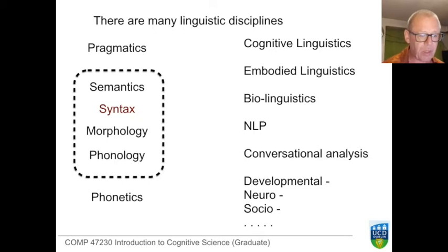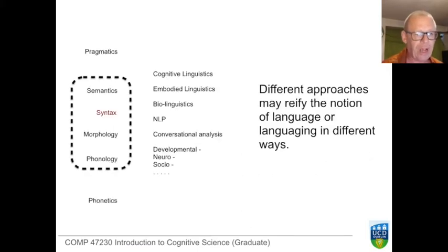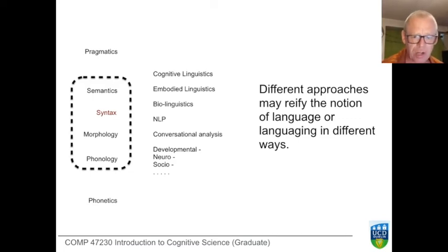Pragmatics and phonetics are somewhat distinct, and we'll make explicit the relationships between them. There are many other fields in linguistics: cognitive linguistics, embodied linguistics, bio-linguistics, natural language processing, conversational analysis, developmental linguistics, neurolinguistics, and social linguistics. There's a huge variety of ways language can be approached, and as we approach language from within these different fields, the object we're talking about — language itself — is changing.